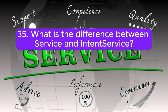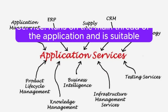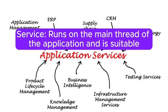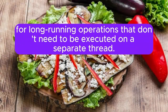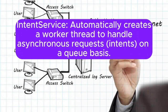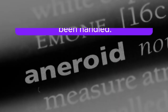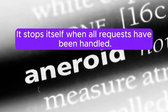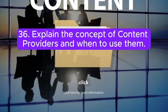Question 35: What is the difference between Service and IntentService? Service runs on the main thread of the application and is suitable for long-running operations that don't need to be executed on a separate thread. IntentService automatically creates a worker thread to handle asynchronous requests (intents) on a queue basis, and stops itself when all requests have been handled.